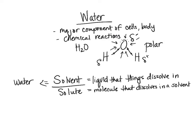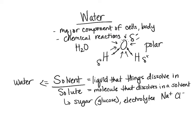Some of our solutes would be sugar — our glucose, for example. That's a major energy source for us. Also our electrolytes. Our electrolytes are going to be our ions, so things like sodium or things like chloride. Those are our electrolytes. They're very important to life and they also dissolve in water.